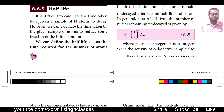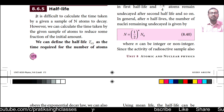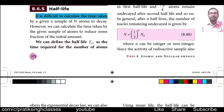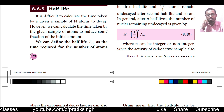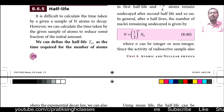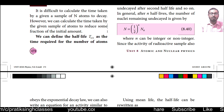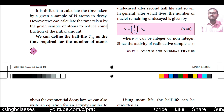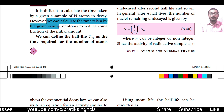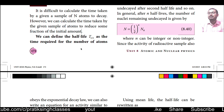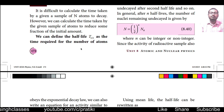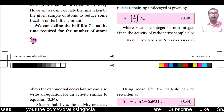Coming to our topic — half life. It is difficult to calculate the time taken by a given sample of N atoms to decay completely. However, we can calculate the time taken by the given sample to reduce to some fraction of its initial amount. Suppose the disintegration started at t = 0; after some time t, we define the half life.